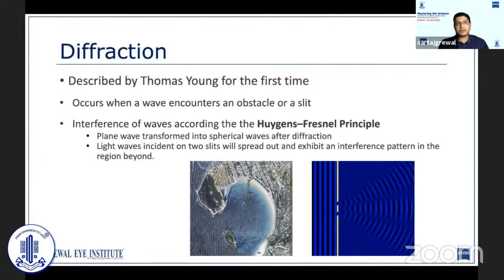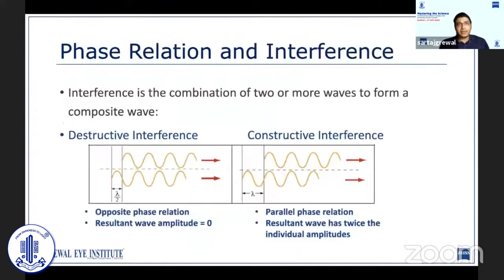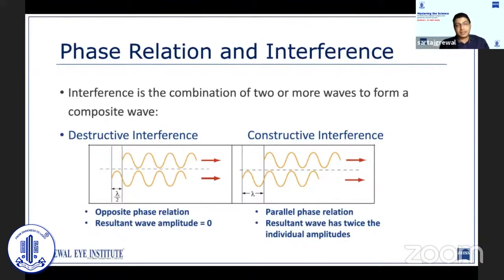The light waves incident on two slits will spread out and exhibit an interference pattern in the region beyond. Interference is the combination of two or more waves to form a composite wave. Interference can be destructive or constructive. Destructive interference occurs when two waves have an opposite phase relation and effectively cancel each other out. Constructive interference is when two waves are in parallel phase relation and the resultant wave has twice the amplitude of each of the original waves.